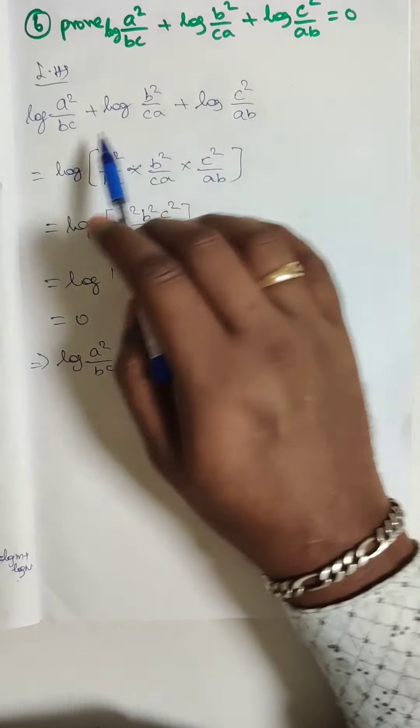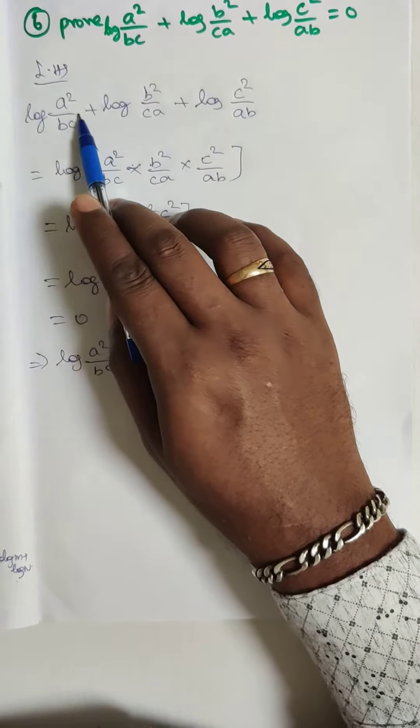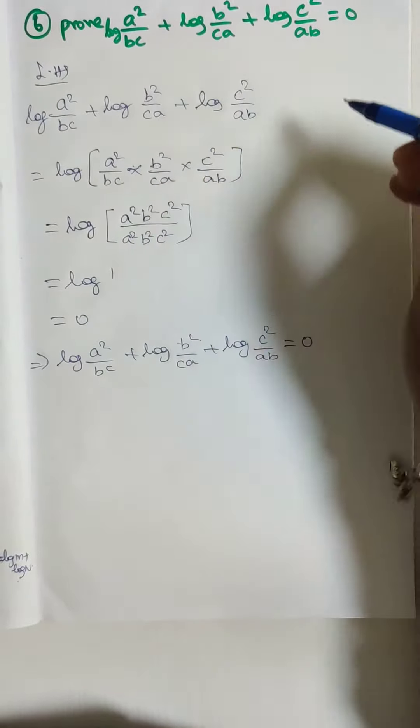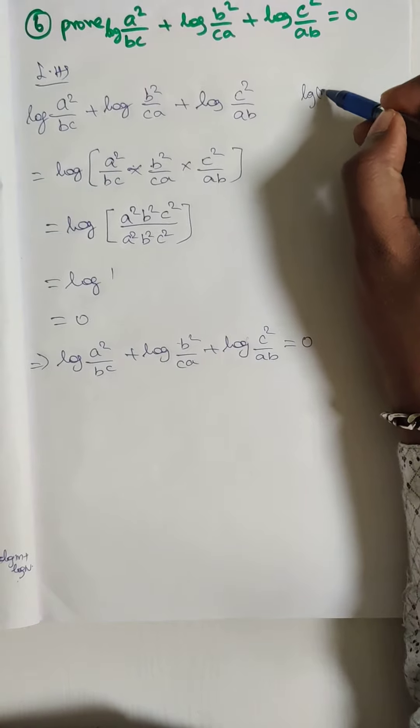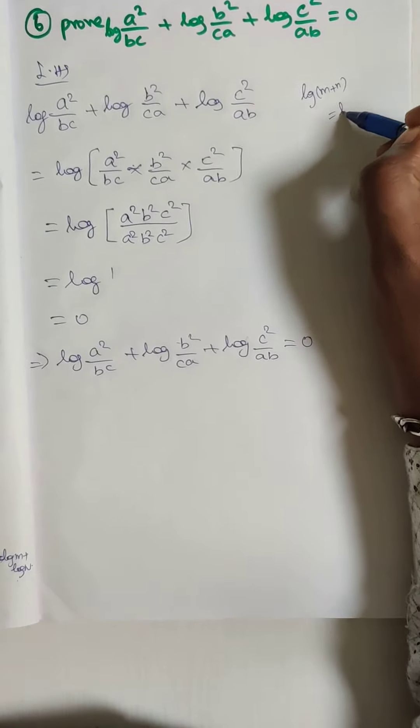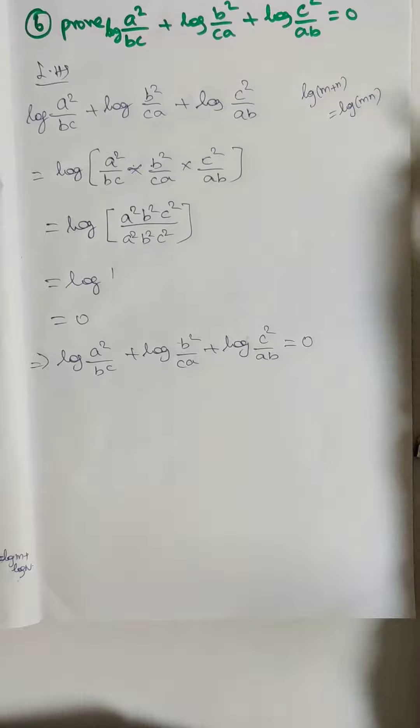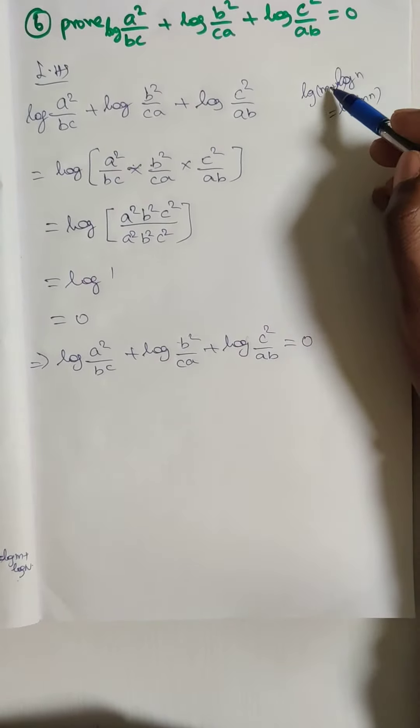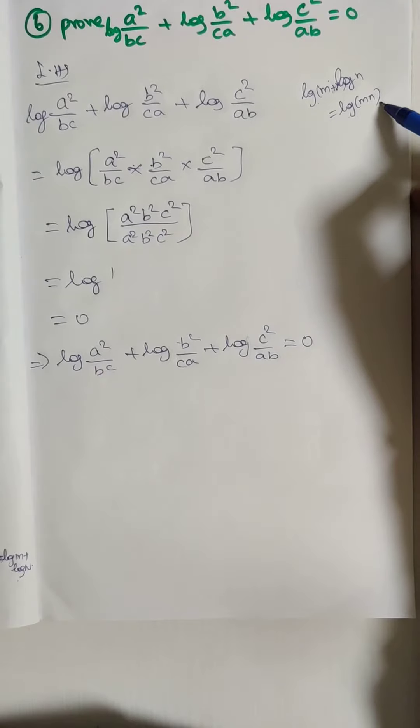So I am going to take LHS: log a square by bc plus log b square by ca plus log c square by ab. Here one formula is there. Log m plus log n is equal to log m into n. So same formula I am going to use here.